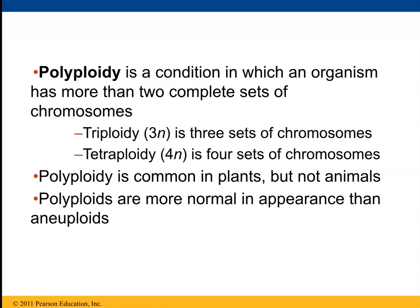Polyploidy of 3N or 4N in plants leads to different varieties and is fairly common. All seedless grapes, seedless watermelons, and commercial strawberries are famously tetraploid. Polyploids are more normal in appearance than aneuploids, where an organism is just missing one chromosome.